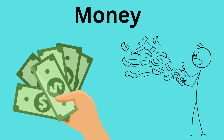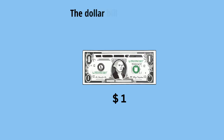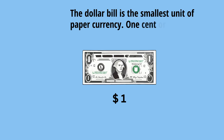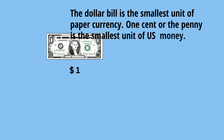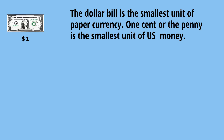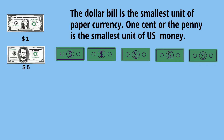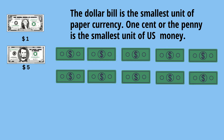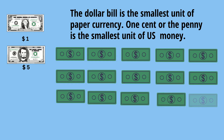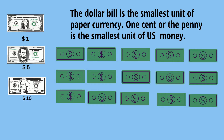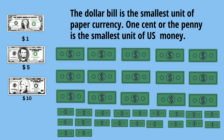To begin with, let's take a look at money. The smallest unit or dollar bill is the one dollar bill. If you take five one dollar bills, that creates a five dollar bill. You can then have ten one dollar bills, and that represents a ten dollar bill. And if you have twenty one dollar bills, that equals a twenty dollar bill.